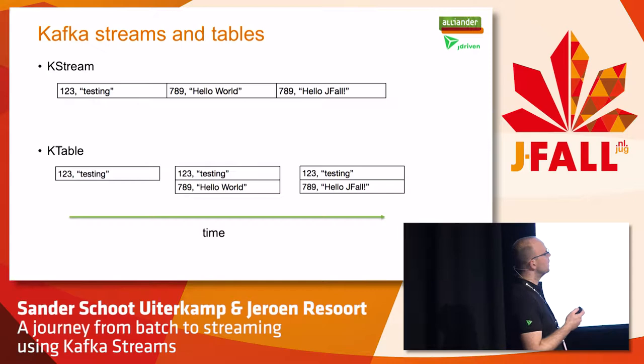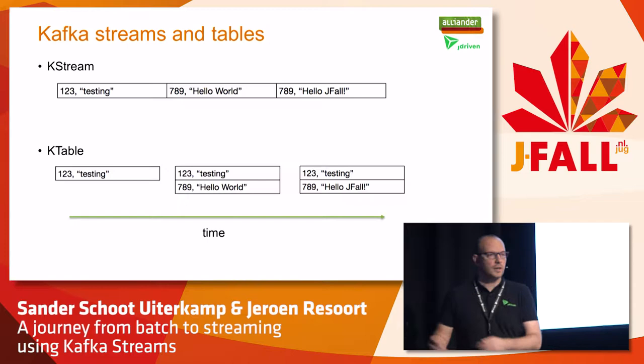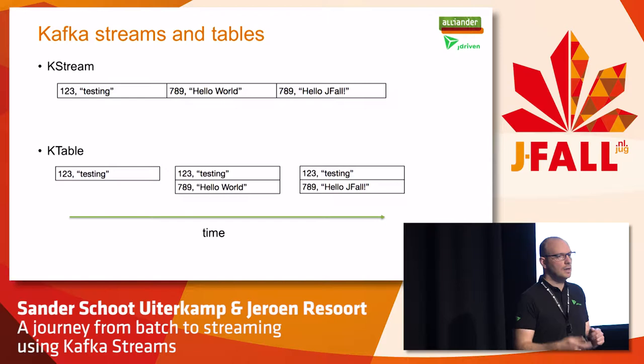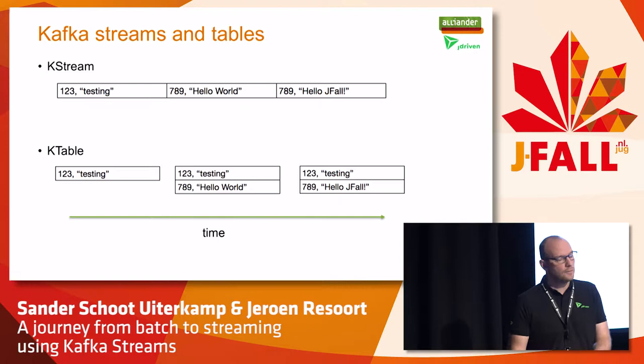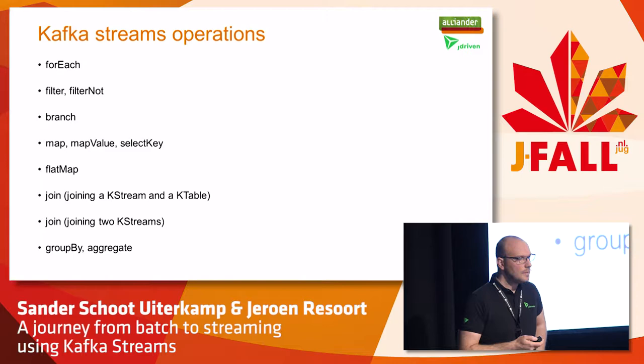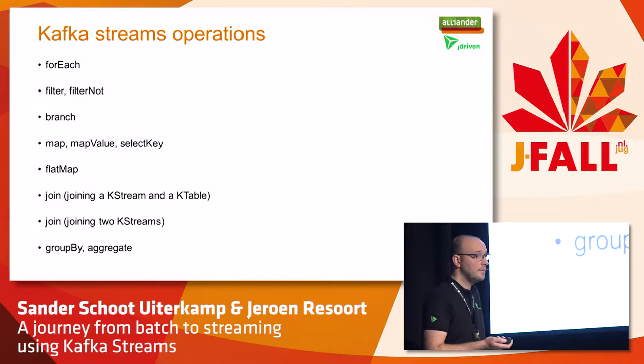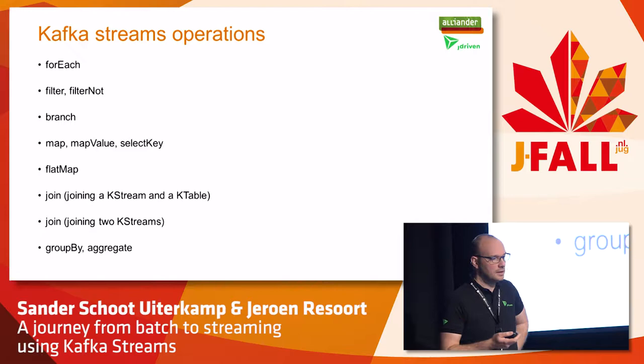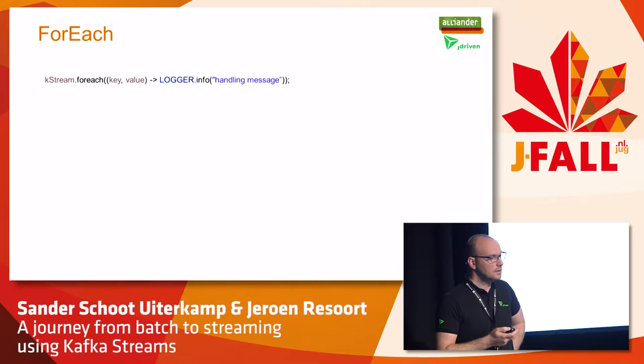The difference between a KStream and a KTable: these are two concepts for the high-level streaming API. A KStream is basically a stream with several messages coming in after each other. A KTable is more like a hash map where you insert records, and a new record with the same key will overwrite the previous record with that key. Kafka Streams has a lot of familiar operations if you know the Java Streams API — you can do filtering, mapping, things like that.